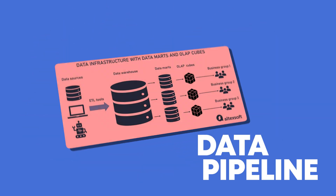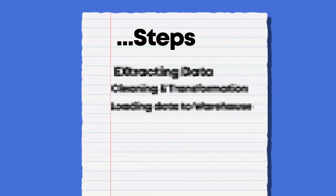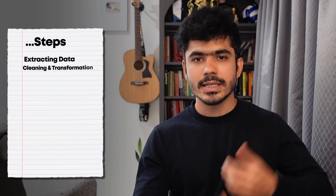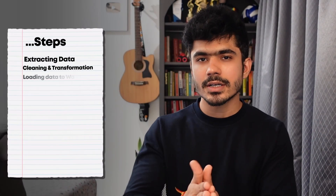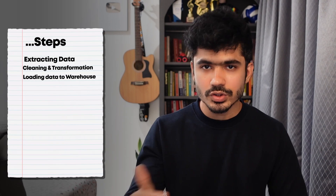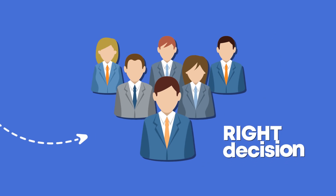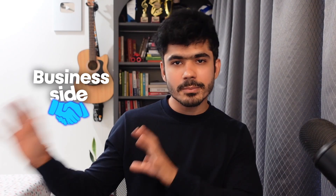A data pipeline is basically a series of steps that need to execute in order to achieve a final outcome. These steps include extracting data, doing some cleaning and transformation, and then loading this data to a data warehouse for analysis purposes. The entire purpose of doing this activity is to help businesses make the right decisions. This is what I was missing.